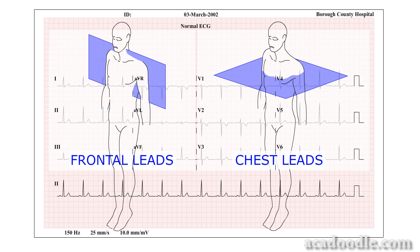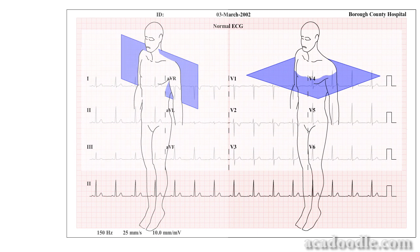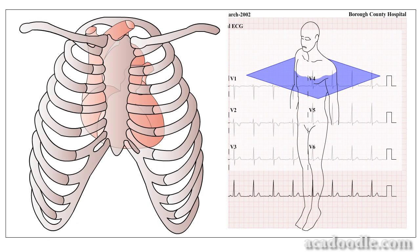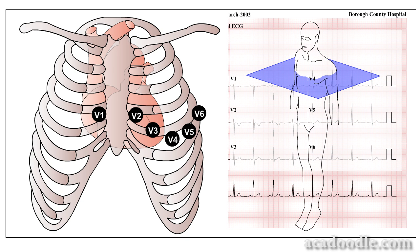We will first deal with the transverse group, the chest leads. The six chest leads, V1 to V6, are placed on the surface of the chest wall in an arc, from V1 in the fourth right intercostal space to the right of the sternum, to lead V2 in the fourth left intercostal space to the left of the sternum, and then at roughly equal intervals to lead V6 in the fifth left intercostal space in the mid-axillary line. These leads examine the flow of depolarisation and repolarisation in the transverse plane from these perspectives.